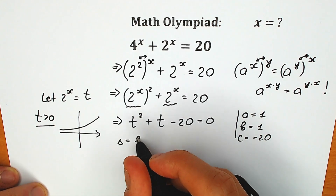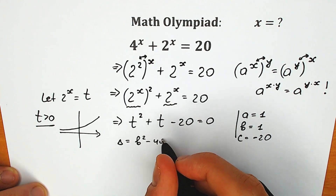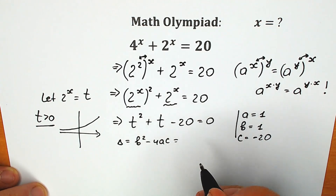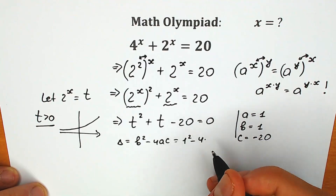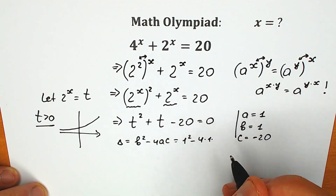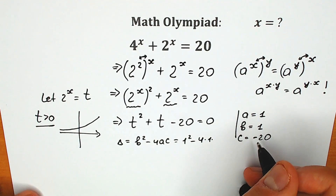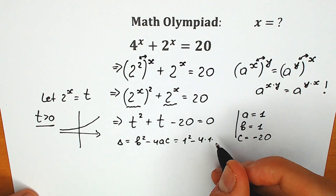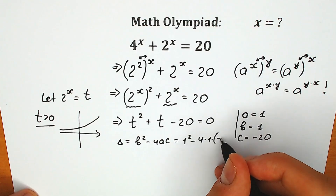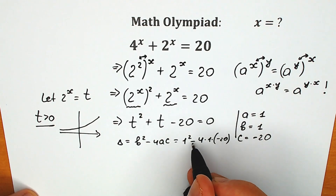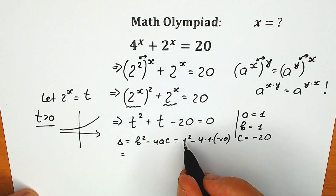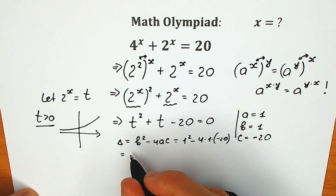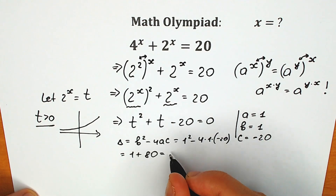Right now let's find the discriminant. Discriminant equals b squared minus 4ac. So: 1 squared minus 4 times 1 times minus 20. The two negatives give us a positive: 1 plus 4 times 20 equals 1 plus 80, which equals 81.